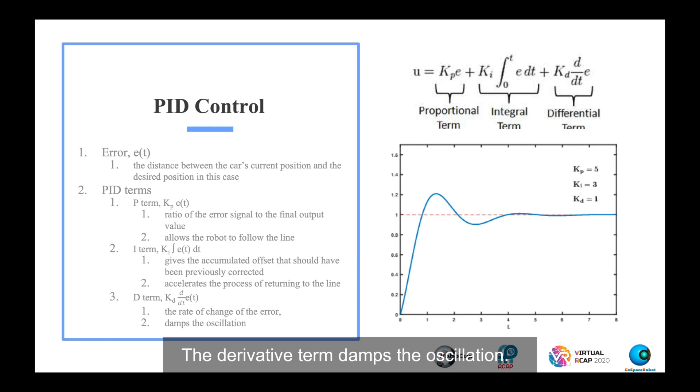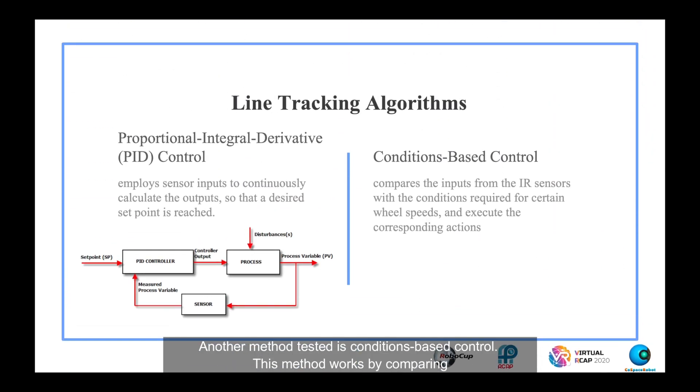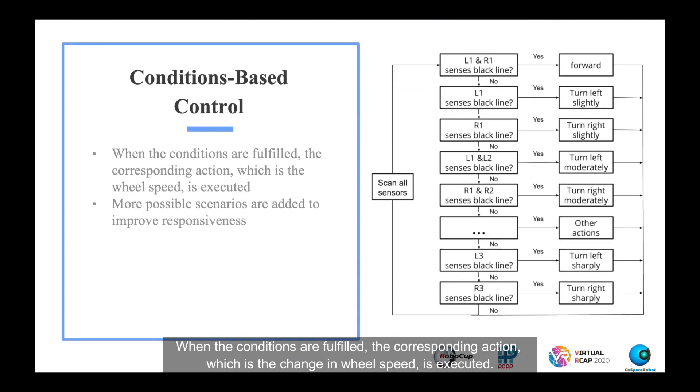The derivative term damps the oscillation. Another method tested is conditions-based control. This method works by comparing the inputs from the IR sensors with the conditions required for certain wheel speeds. When the conditions are fulfilled, the corresponding action, which is the change in wheel speed, is executed.